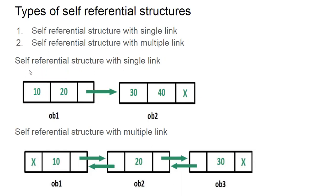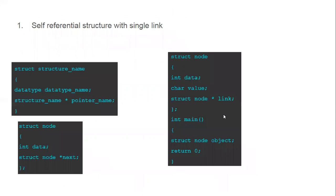When you add data it creates a structure of the same type, and when you add another one it is also of the same type — that is the self-referential structure. The link connects to another structure of the same type. In the multiple link case, movement can go in both directions: one node can be connected to the next and also back to the previous, so you can access it in two ways.